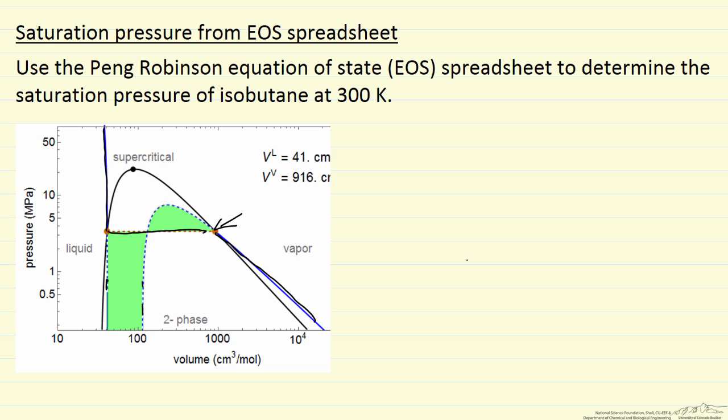But what we want to know is how do we determine this pressure. We have the general equation of state and we want to determine this pressure. So we're going to use the properties of fugacity to determine the saturation pressure where we're drawing that horizontal line connecting the liquid and the vapor phases.